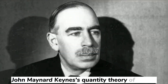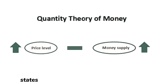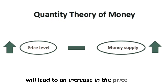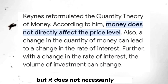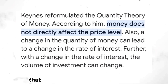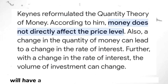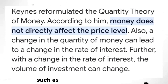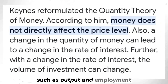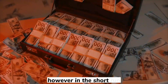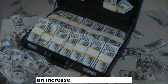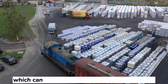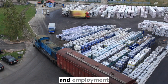John Maynard Keynes' quantity theory of money states that an increase in the money supply will lead to an increase in the price level, but it does not necessarily imply that the increase in the money supply will have a direct effect on real economic variables, such as output and employment. However, in the short run, an increase in the money supply can lead to an increase in spending, which can create a temporary increase in output and employment.